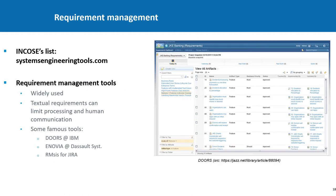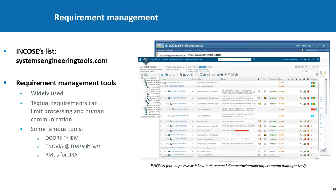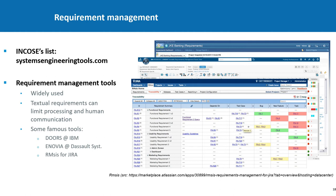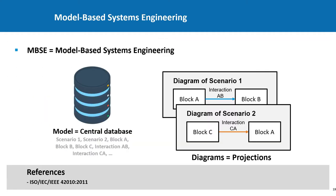In a requirement manager, you typically have tables of requirements where the requirements are short sentences. You can see tools like DOORS, Enovia, or RMCs. It's widely used, but textual requirements can be a problem — it's harder to process them because they can only be read by a human, and they can also limit communication, since a drawing is worth a thousand words. The answer to these limits is model-based systems engineering. In MBSE, if your system includes two interacting components, you just draw it. The most important is that the diagrams are not just pictures — they form all together a model, like a central database. Block A in two different diagrams is the same element of the model.